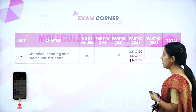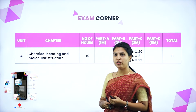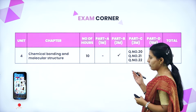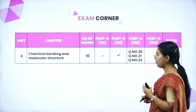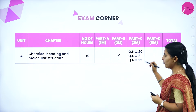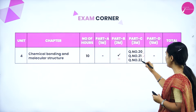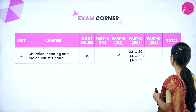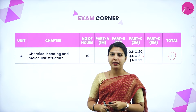We will see first the exam corner. In this chapter the requirement of teaching hours is 10 hours. In the question paper pattern there are 5 sections. For this chapter, a 2-mark question and 3-mark, 3 questions will be allotted in question numbers 20, 21 and 22. Overall, the marks weightage is 11 marks for this chapter.